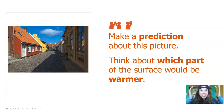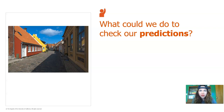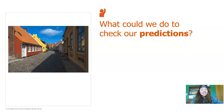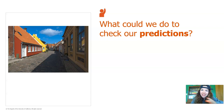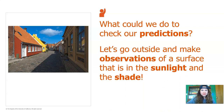Okay, do you have your prediction? I do too. What could we do to check our predictions? We could go to this place, but that's not possible right now — we're all supposed to stay in our houses to be safe, and this place might be very far away. Is there a different way we could check the temperature difference in the two spots? Let's go outside and make observations of a surface that is in the sunlight and in the shade.